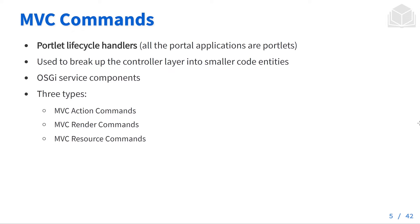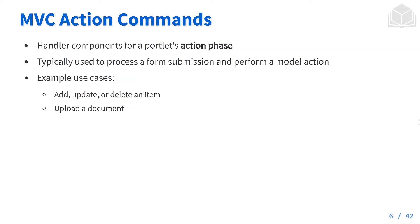The three types are MVC action commands, MVC render commands, and MVC resource commands. MVC action commands are handler components for a portlet's action phase. These are typically used to process a form submission and perform a model action. Some example use cases are adding, updating, or deleting an item, or something like uploading a document.